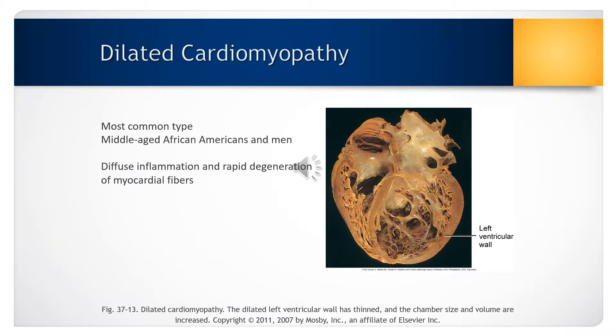Dilated cardiomyopathy is the most common type of cardiomyopathy, with a prevalence of 5 to 8 cases per 100,000 people in the United States. It is characterized by diffuse inflammation and rapid degeneration of myocardial fibers that results in ventricular dilation, impairment of systolic function, atrial enlargement, and stasis of blood in the left ventricle.